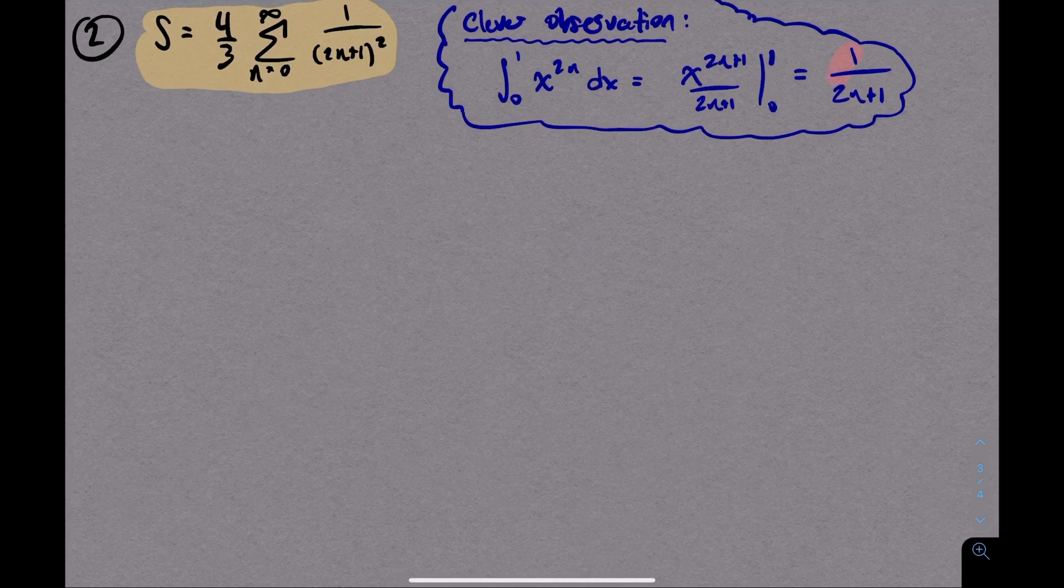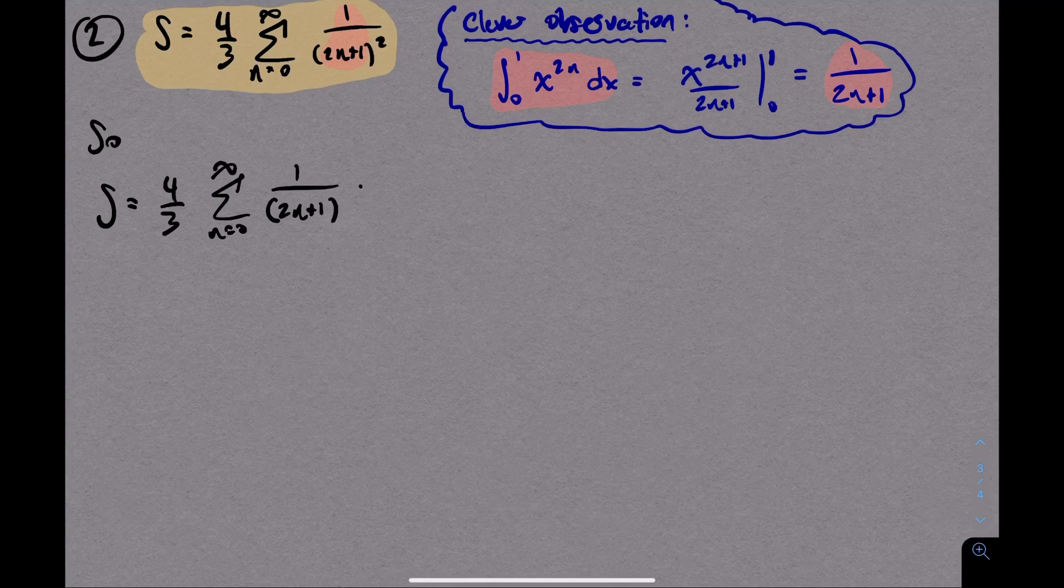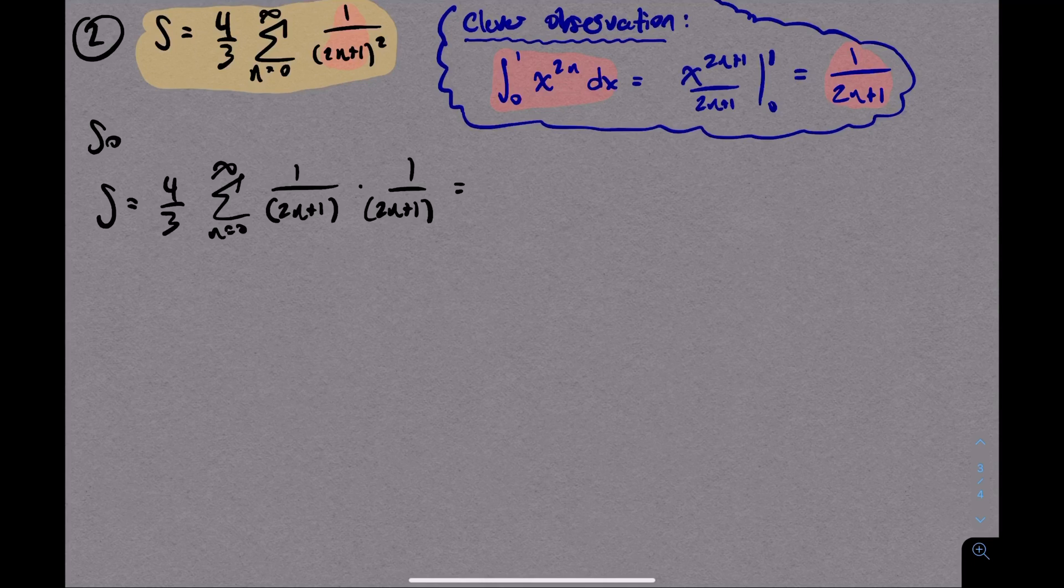Ah, so I can rewrite 1 over 2n plus 1 as an integral. And in the sum here, we have two different copies of 1 over 2n plus 1. So here's what we can do. Start off with this sum, which is 4 thirds times the sum of the product of 1 over 2n plus 1 with itself. Using the equality in the blue thought bubble, that first 1 over 2n plus 1, I can rewrite as the integral from 0 to 1 of x to the 2n dx.